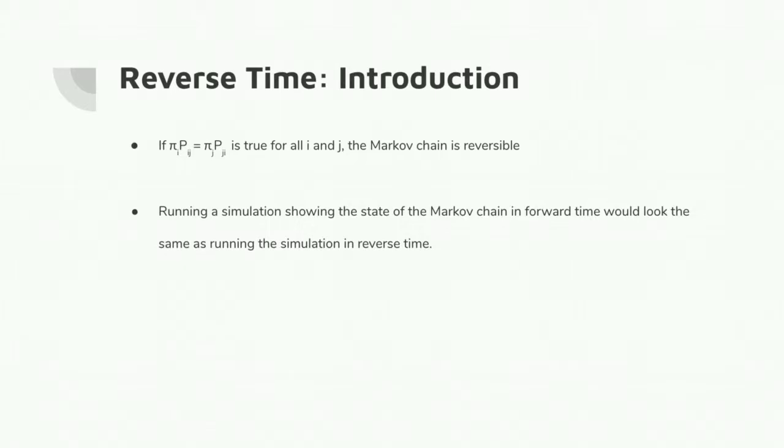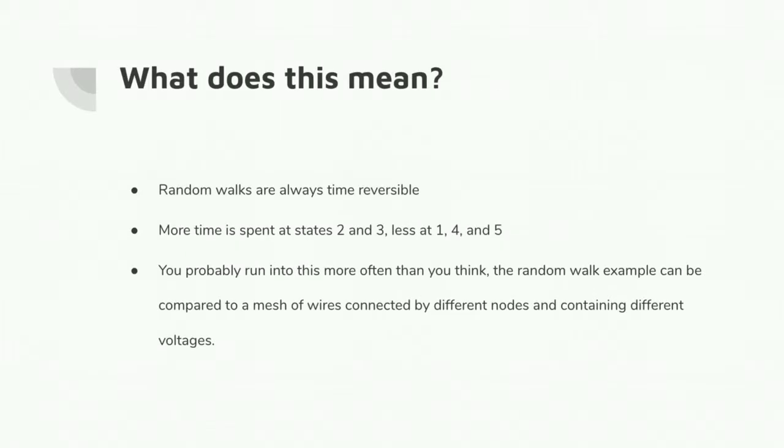What does this mean for us? Random walks are always time reversible. In this particular one, we spend a little bit more time at states 2 and 3. We could have seen that with the dominant eigenvector. You probably run into this more often than you think, especially if you build circuits. If you think about our random walk as a mesh of wires with a voltage running through them, and each of our states are different nodes, you can use this concept for voltage calculations in your circuits class.